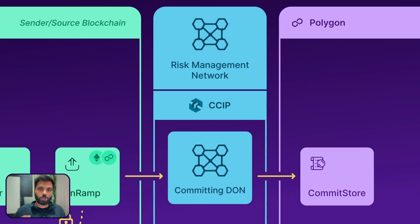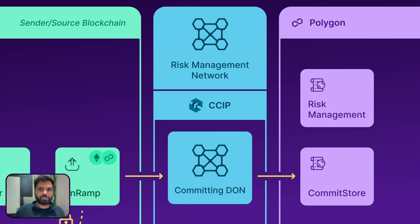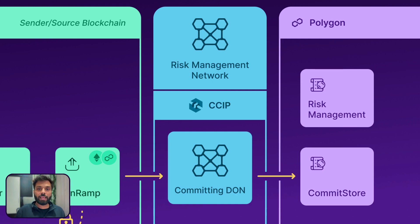While this is happening, the Risk Management Network is also working in parallel. It has two components: an off-chain component, which is a network of risk management nodes, and an on-chain component, which is a risk management smart contract on the receiving chain. The off-chain nodes generate their own Merkle root and match it with the Merkle root created by the Committing DON. If it matches, they bless or validate the Merkle root and send it to the risk management smart contract on the receiving chain.